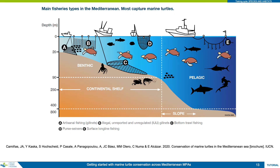Bottom trawls and pelagic longlines are the fisheries mainly impacting marine turtles, with around 50,000 and 30,000 annual capture events respectively. Bottom trawl and fixed gears such as gill nets and trammel nets mainly interact with turtles in foraging habitat, with the greatest impact on continental shelves of the northern Adriatic Sea, Egypt, Israel, Tunisia and Turkey. Pelagic longlines mainly interact with turtles in the water column where they feed on pelagic prey or migrate between locations.